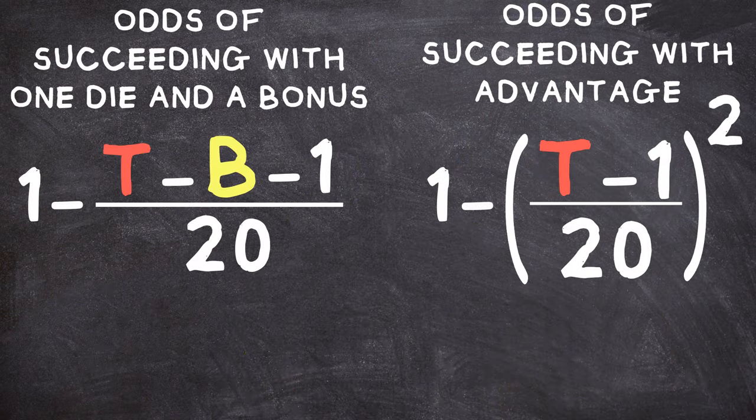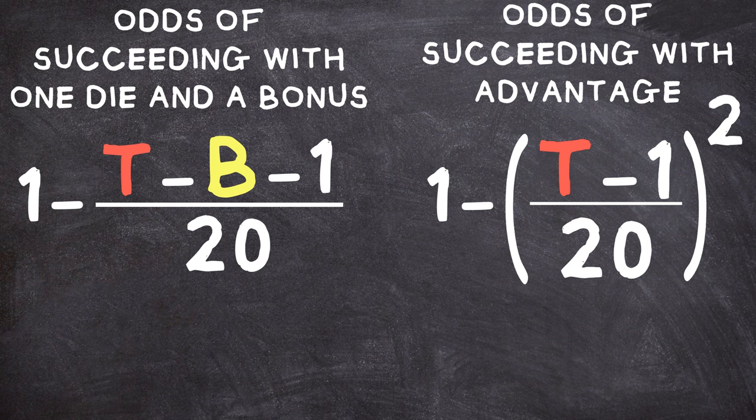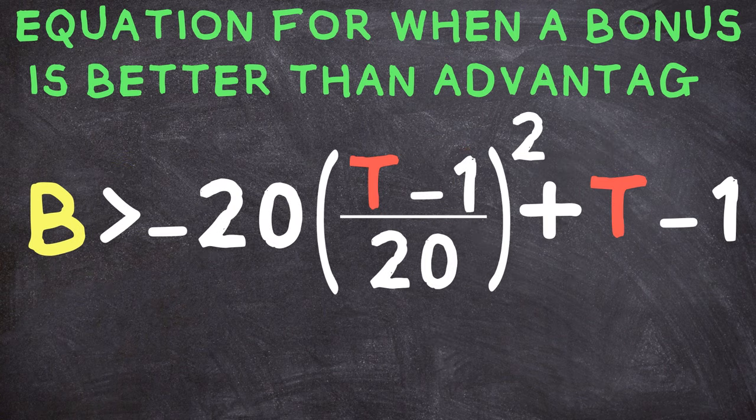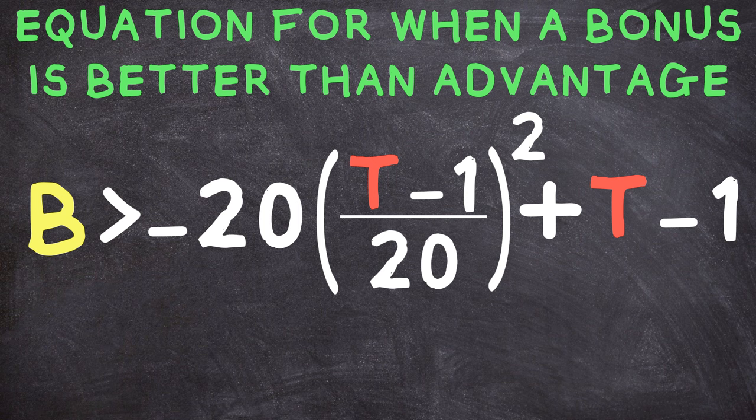So we've got an equation for the success rate of any bonus and with advantage, depending on the difficulty. Now we just need to see which one is better. To do that, let's write out an inequality using our two equations. Doing some algebra magic, we can rearrange this equation to get our two variables, target and bonus, on opposite sides. And if we do that, we find that you are better off taking a bonus to a roll instead of advantage if that bonus is greater than negative 20 times your target minus one over 20 squared plus your target minus one. You know, just a nice real easy equation that you could quickly reference in the heat of combat. Now don't worry, I'll make this easier to understand in a second. But first, there's one more wrench I want to throw into this whole problem.